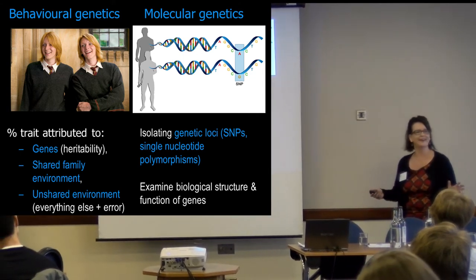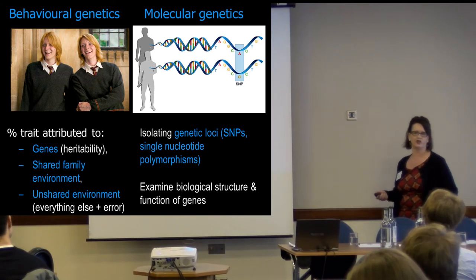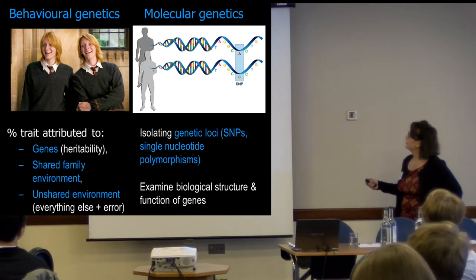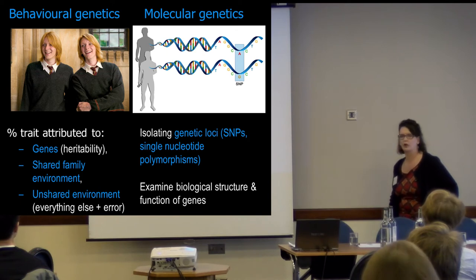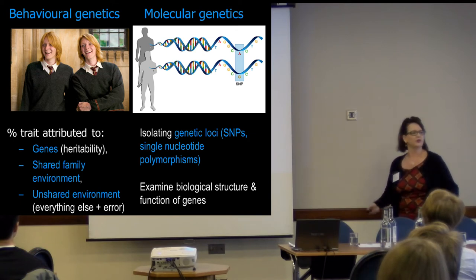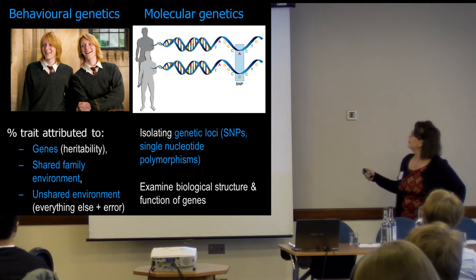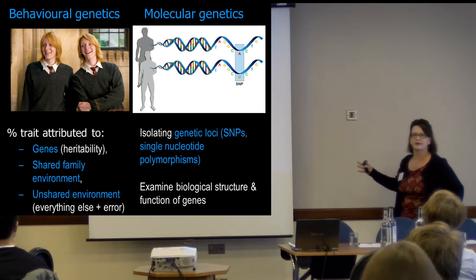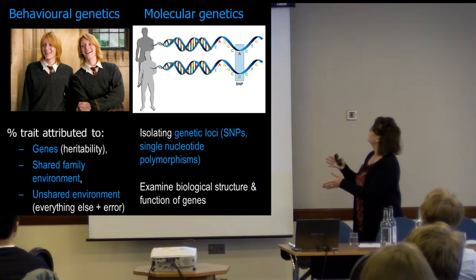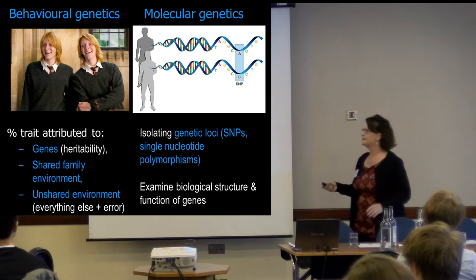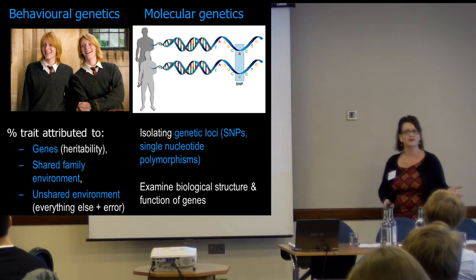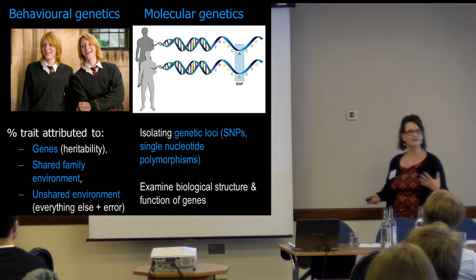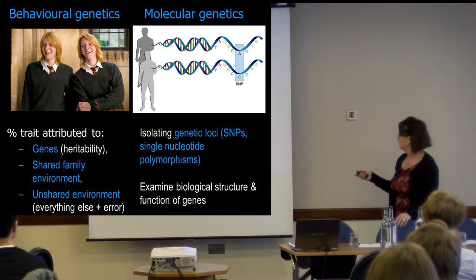I'll talk a little bit about twin studies, but what I'm talking about is molecular genetics — where we actually look at whole genome data. We look at something called single nucleotide polymorphisms, or SNPs. These SNPs vary. We're about 90% similar, but on these small AGTC variants we can see differences between individuals. We want to see what these genes do — their function and structure. That's the difference between behavioral genetics and molecular genetics.